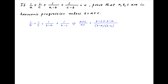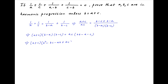this implies that a plus c times b minus a times b minus c is equal to ac times 2b minus a minus c. Which implies that a plus c times b squared minus bc minus ab plus ac is equal to 2abc minus a squared c minus ac squared.